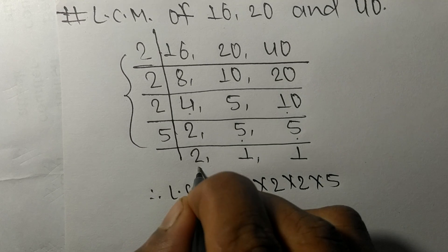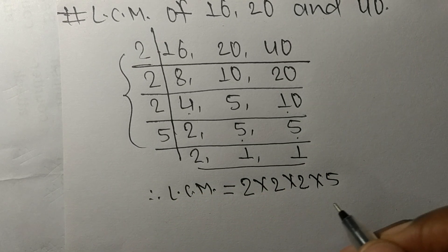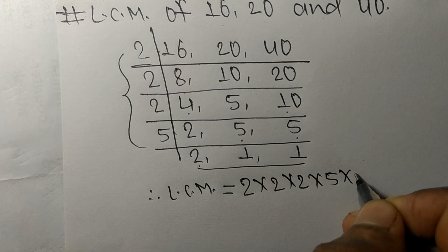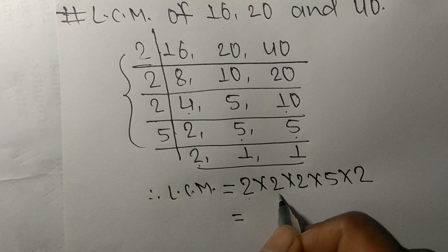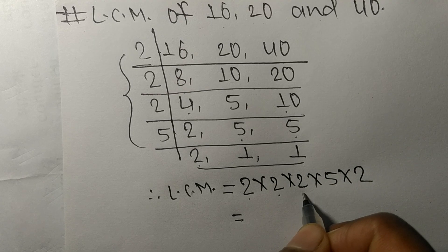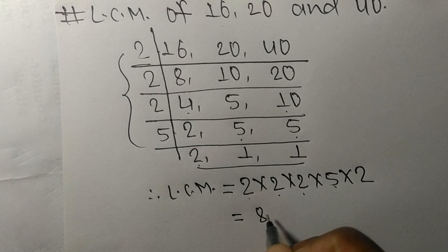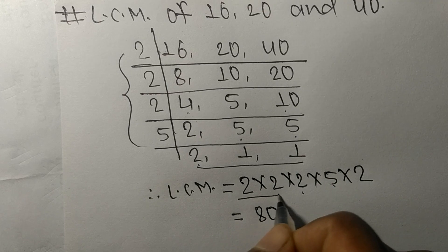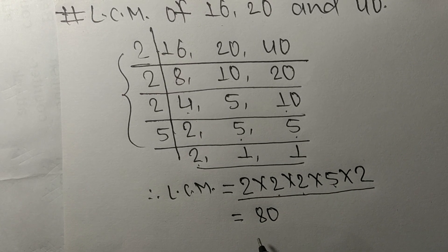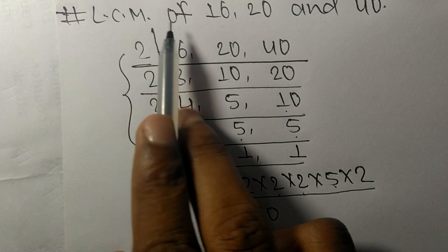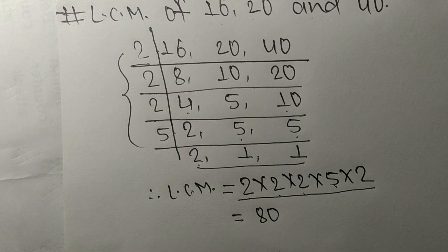From this side we choose the numbers greater than 1, that is 2, so we multiply: 2 times 2 equals 4, 4 times 2 equals 8, 8 times 5 equals 40. By multiplying all these numbers we get 80, so 80 is the LCM of 16, 20, and 40.